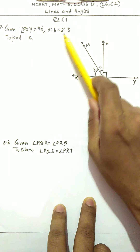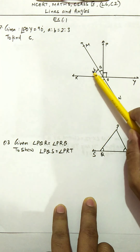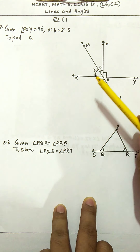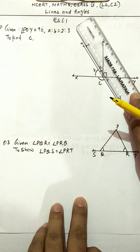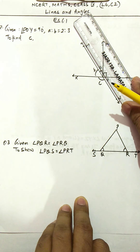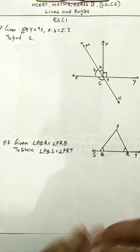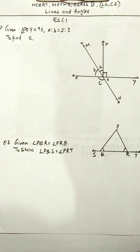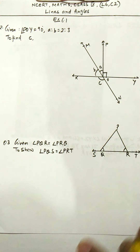We have ratio a:b = 2:3. A quick method: the sum of ratio parts is 5, so angle a = (2/5) × 90 = 36°, and angle b = (3/5) × 90 = 54°. Alternatively, you can let a = 2x and b = 3x, but it's better to use the direct ratio method which gives the answer without assuming variables. Always think through the approach before writing the solution.